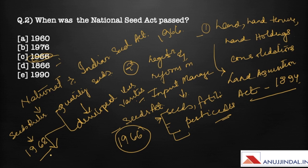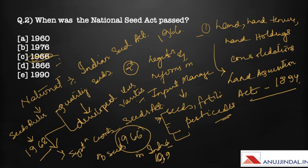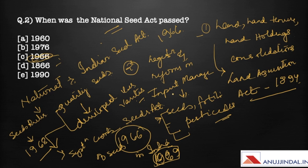Soon after the National Seed Act was launched, the first Seed Rules came into being in 1968, which provided seed certification and minimum quality standards for the kinds and varieties of seeds. Right after this, there was a systemic certification of seeds in India, which was in 1969.